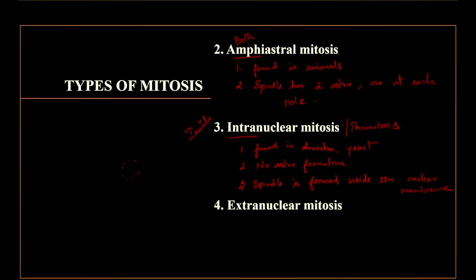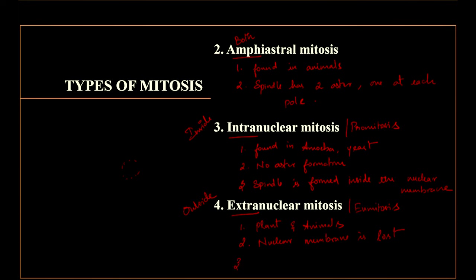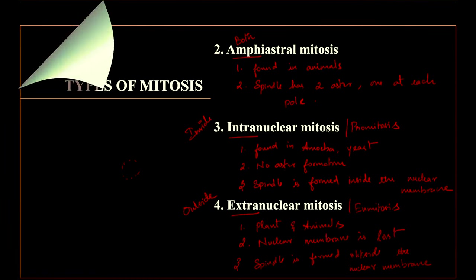Coming to extranuclear mitosis, also called eumitosis — 'extra' means outside. It is found in plants and animals. It is quite normal — the nuclear membrane is going to disappear, and the spindle fiber is formed outside the nuclear membrane.